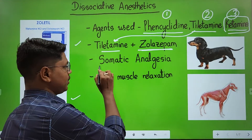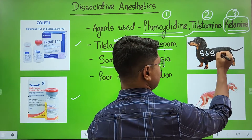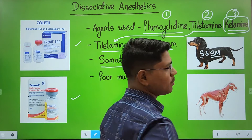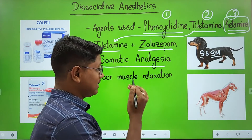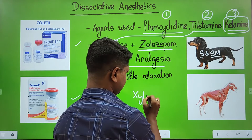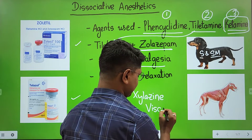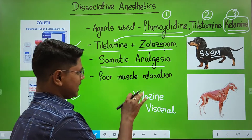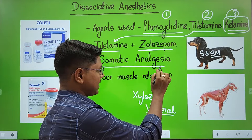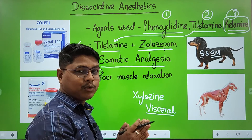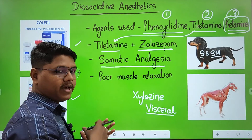Dissociative anesthetics produce very good somatic analgesia. Somatic analgesia means the skin and the superficial muscles — the integumentary system and the superficial musculoskeletal system — you will find very good analgesia there. Note the point. Zolazepam, on the other hand, produces very good visceral analgesia. So when you combine Zolazepam and Ketamine, Zolazepam will produce the visceral analgesia and Ketamine will produce the somatic analgesia. In combination there will be both visceral and somatic analgesia, producing very good overall analgesia.